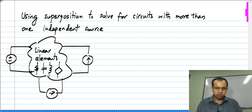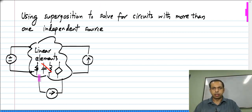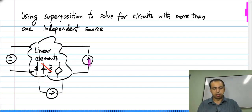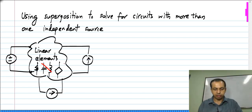So even inductors and capacitors would not be there. Essentially, we will be discussing circuits with resistors and controlled sources. Everything is enclosed in this box except for the independent sources. The condition is also that for these linear controlled sources, the controlling quantity is within the circuit.